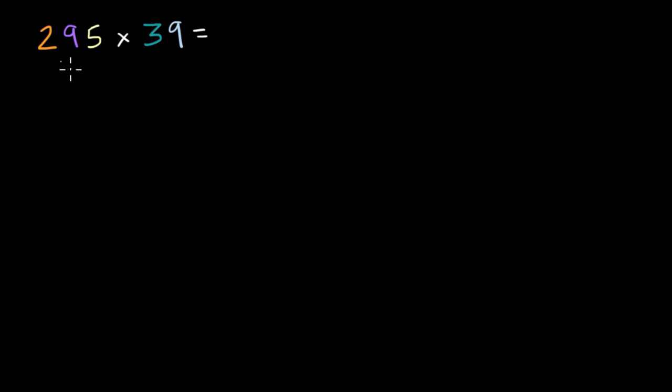What we're going to do in this video is figure out what 295 times 39 is. We're going to use a technique known as partial products, which sounds very fancy, but hopefully when we see it, it's just breaking down these numbers and multiplying all of the different parts and then adding up everything together.